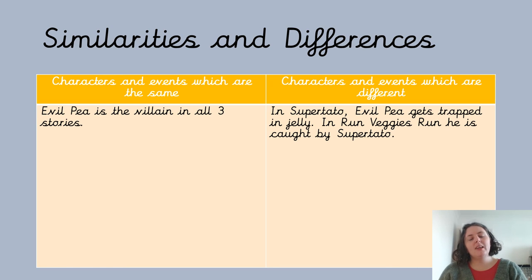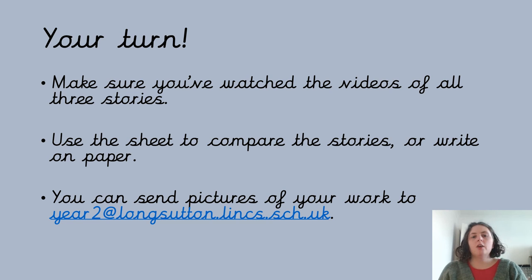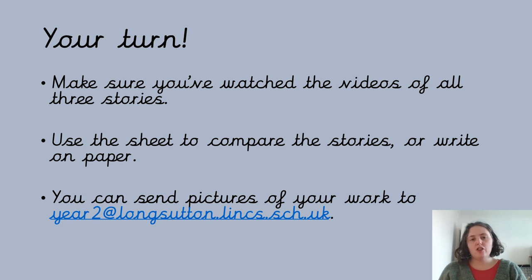In each part of the table, you need to write some things that are the same and some things that are different. I've just done one example of each, but I bet you've got loads more, so you can do as many as you can think of. To get on with your work, make sure you've watched the videos, or if you've got the books, that you've read the three stories: Supertato, Run Veggies Run, and Evil P Rules. Then use the sheet in the home learning pack to compare the stories. If you don't have the sheet, you can just write on a piece of paper and divide or fold it in two. Once you've thought of all those similarities and differences, please send Mrs. Lee and I a picture of what you've done — the email address is on there. I hope you enjoy these stories. I really like Run Veggies Run and I'm looking forward to seeing your comparisons!